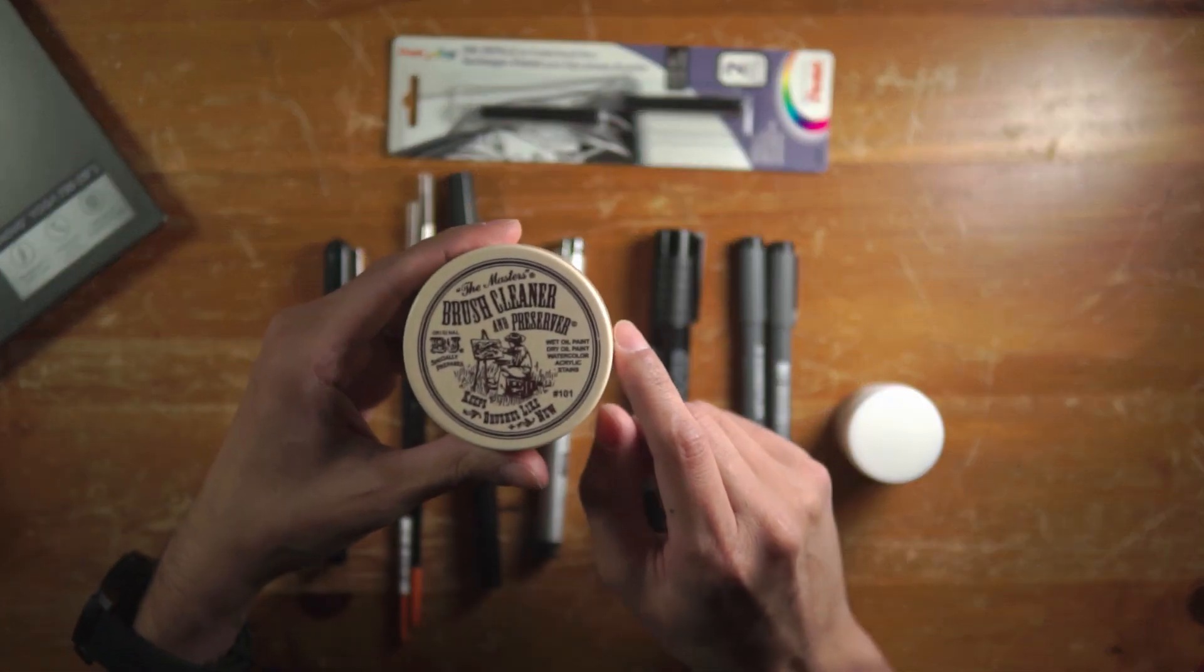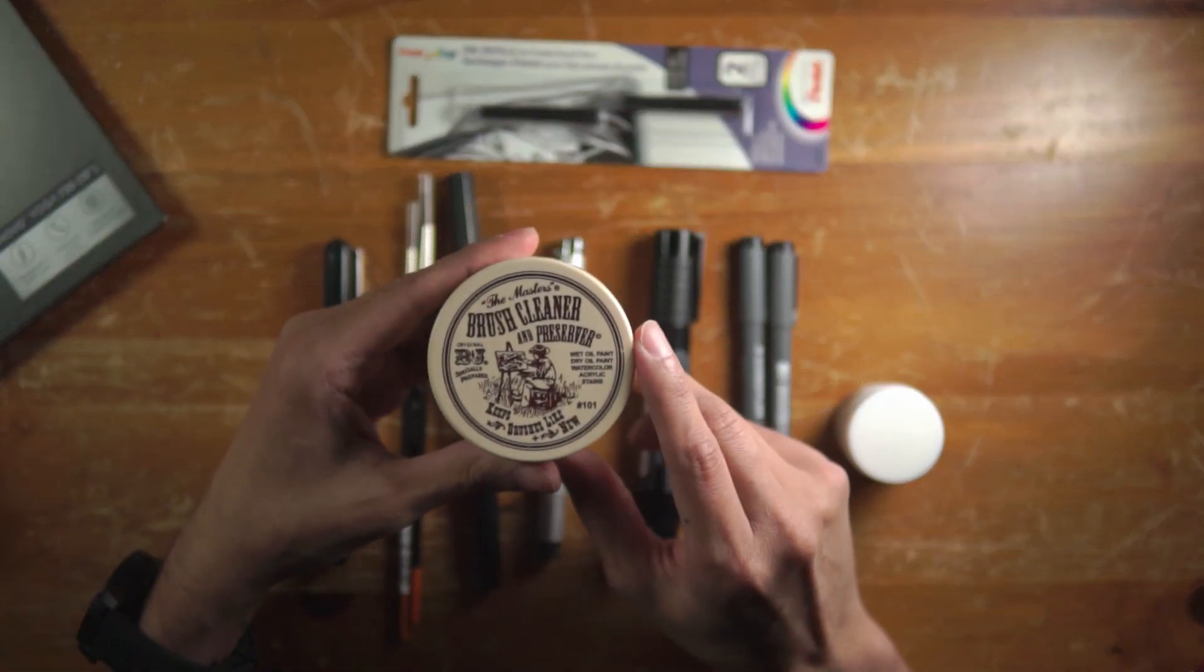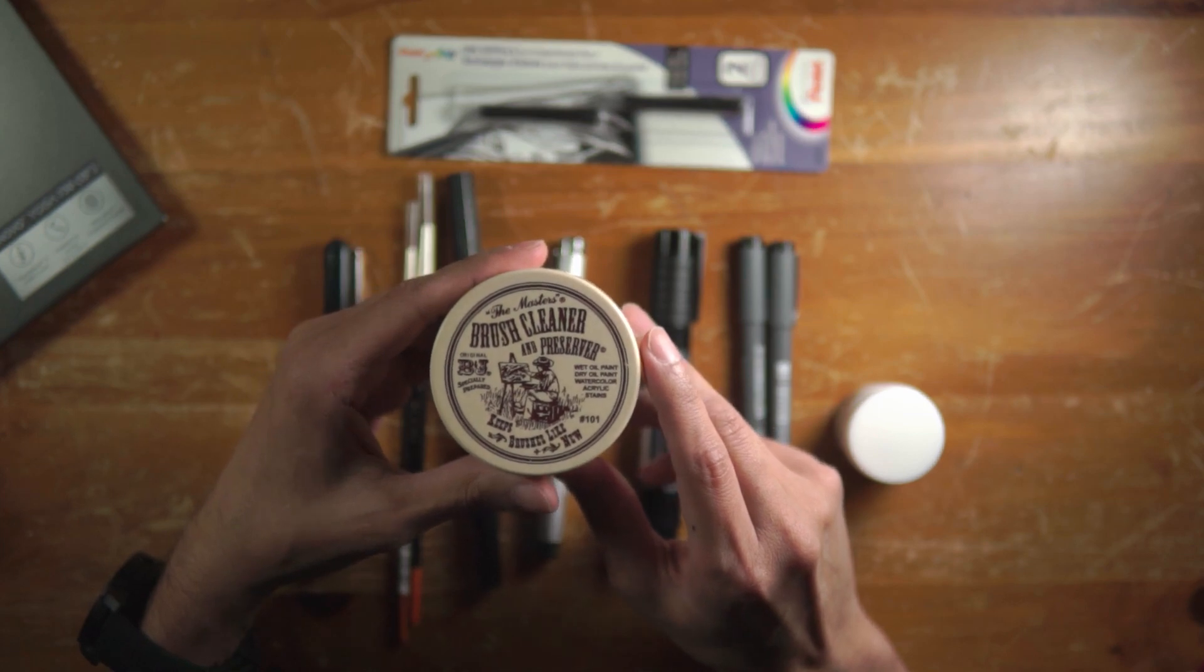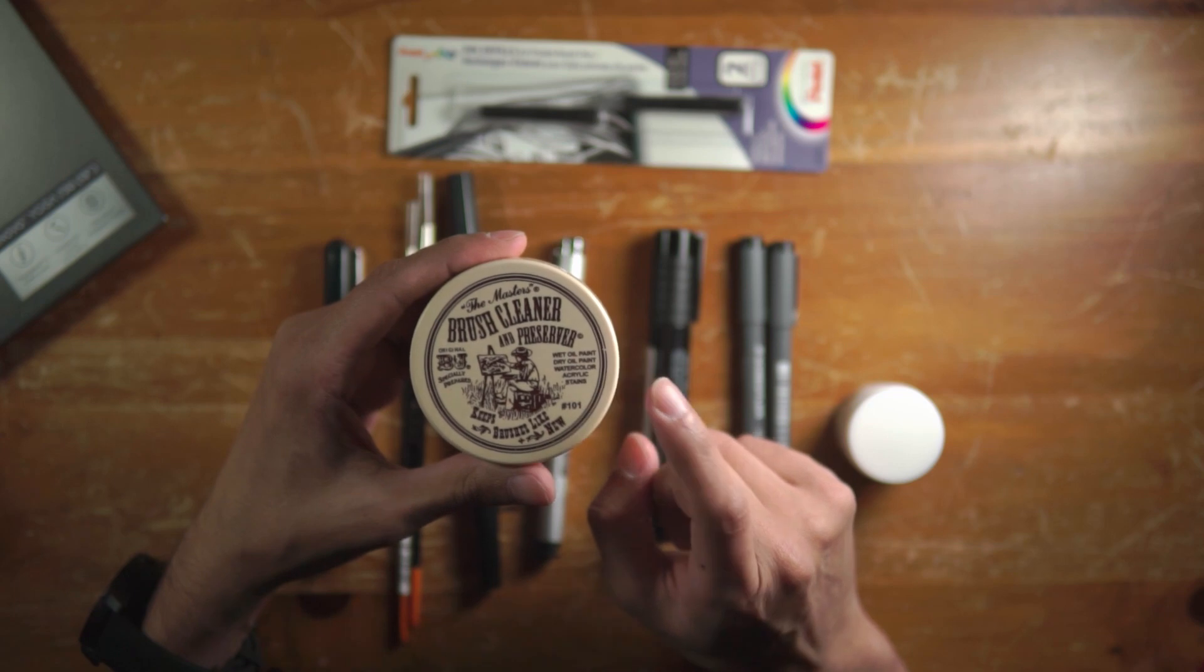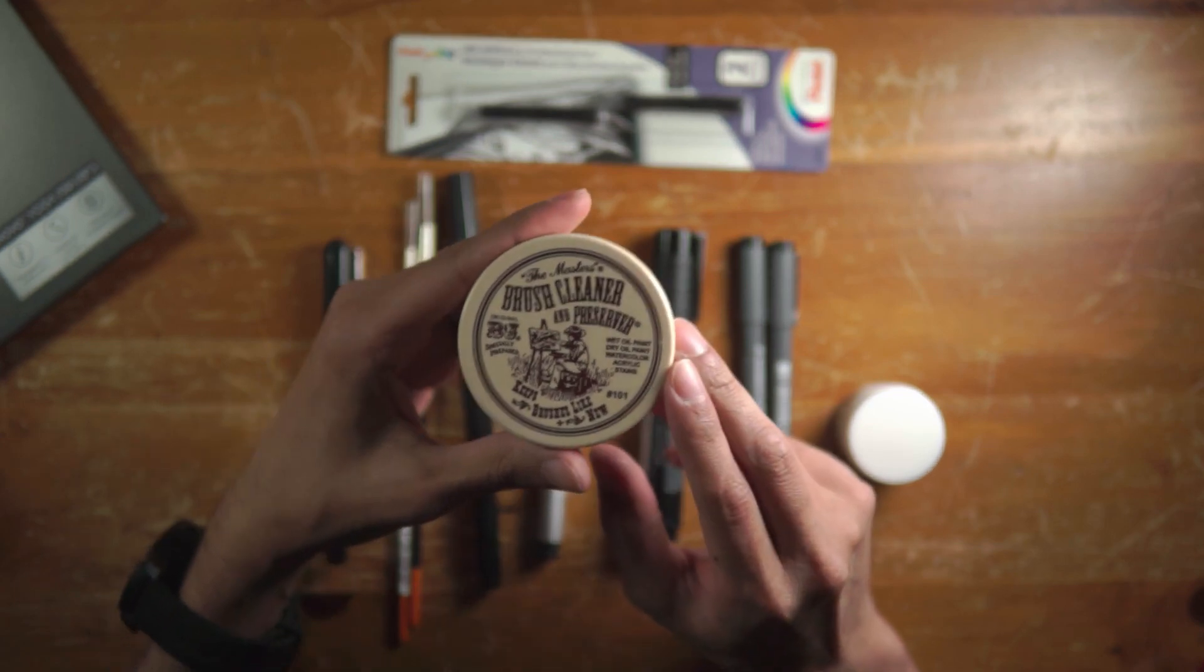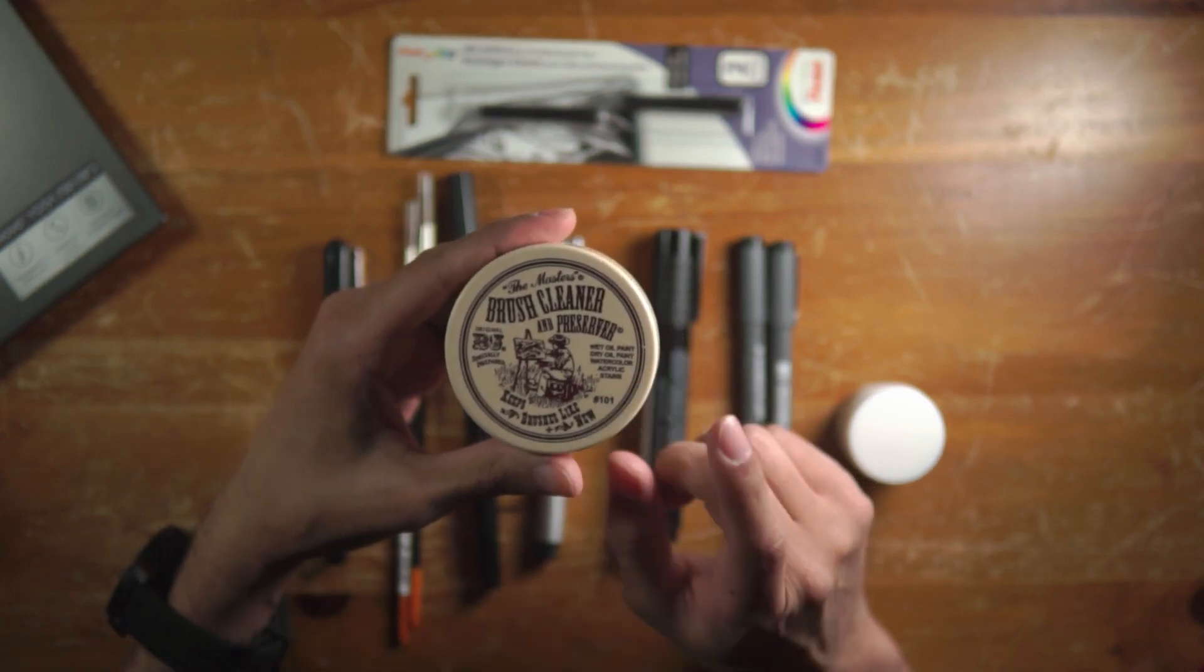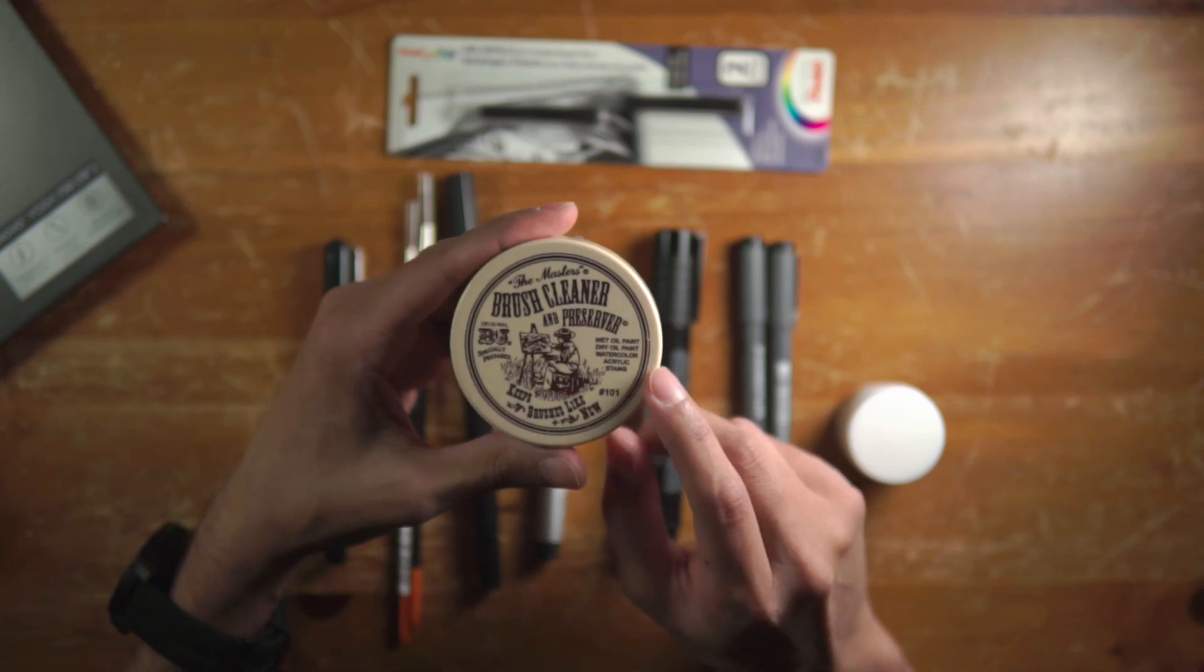So what I use to maintain my brushes in top shape is this product. It's called the Masters Brush Cleaner and Preserver. You can use it for wet oil paint, dry oil paint, watercolor, acrylics, and you can use them for maintaining your brushes if you use your brushes for inking like I do.